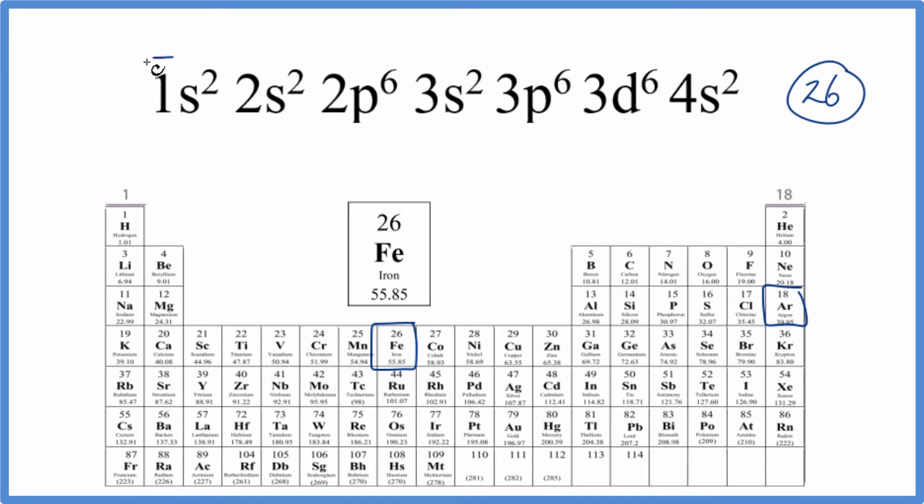argon here. So instead of writing all of these 18 electrons, these all add up to 18, we could just write Ar in brackets. That would look like this here.